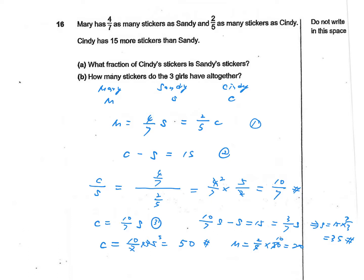So the total number of stickers the three girls have is M plus S plus C. M equals 20, S equals 35, and C equals 50. So the answer is going to be 105.